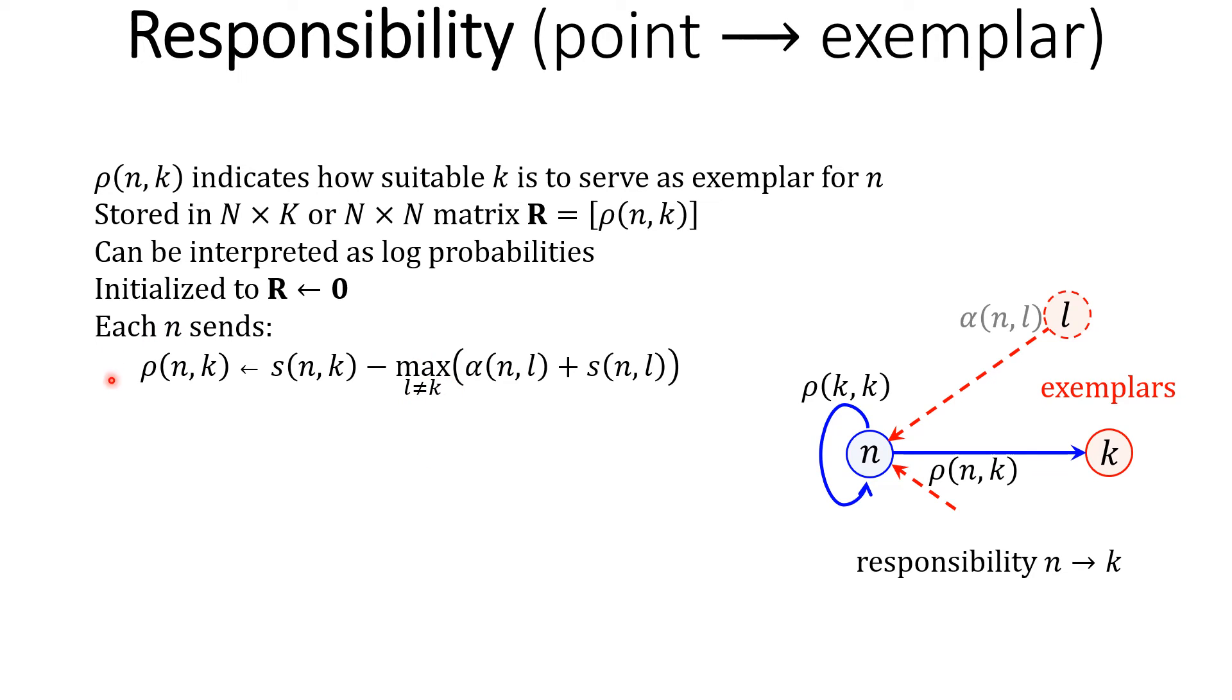Now, this is how each responsibility rho_nk is computed. Rho_nk that point n sends to exemplar k includes the similarity S_nk. Naturally, because the more the similarity between the two n and k, the better suited k is to serve as an exemplar for n.